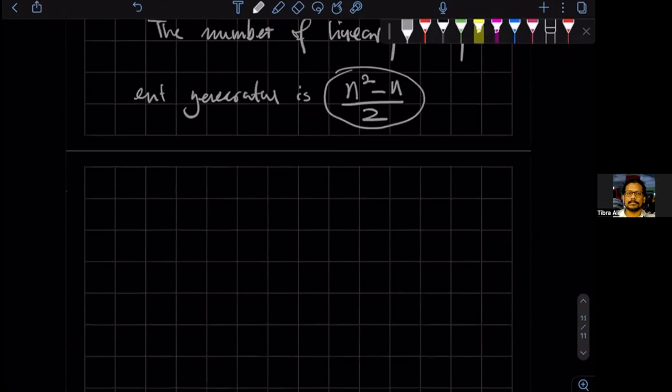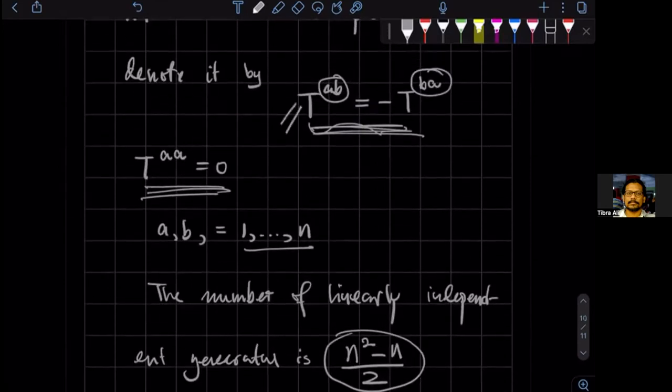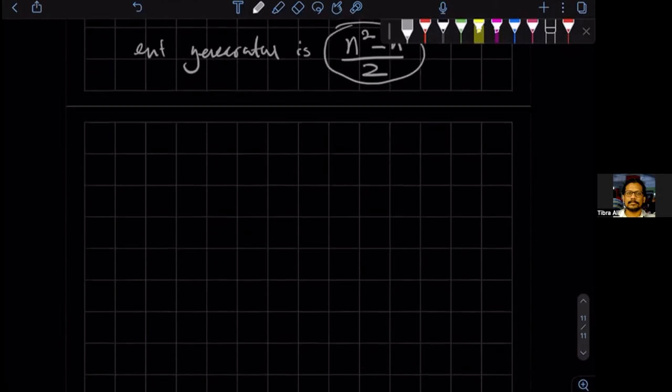So now we can actually write down an explicit form of this generator. So T^AB, these are essentially the label of the generator, but it's a matrix, an N by N matrix, because it's a rotation in N dimensions. So it's going to have some index, say the index is CD.